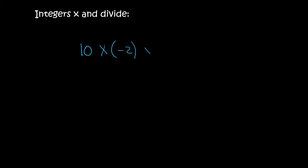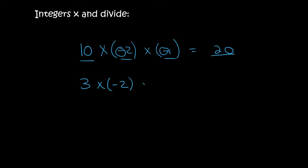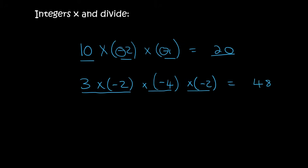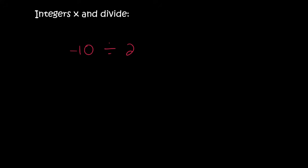So if I have 10 times minus 2 times minus 1, I can say 10 times 2 times 1 which is 20. Then I count the number of negatives — there are 2 of them, and so the answer is positive. Then 3 times minus 2 times minus 4 times minus 2: 3 times 2 is 6, times 4 is 24, times 2 is 48. Then I count the negatives — there are 3. So the answer is minus 48. The same is true for divide.